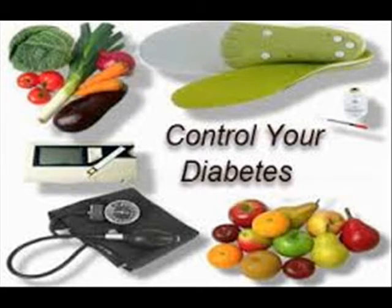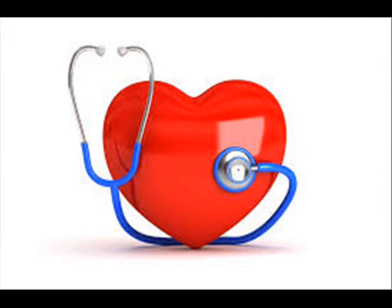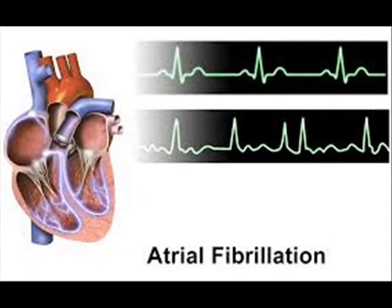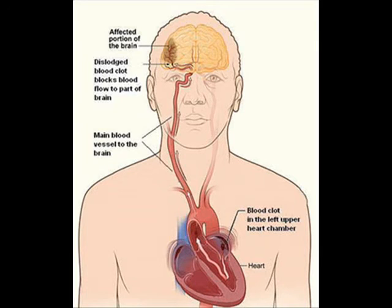If you have diabetes, you should keep your blood sugar under control. You should also get your heart checked, because a condition called atrial fibrillation can lead to clot formation — and this clot can travel from the heart to the brain. These are the key steps to prevent stroke.